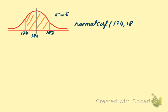The second number is the right line — the maximum. That's the second number. Third is the mean and the fourth is the standard deviation. Then enter and we have the chance.